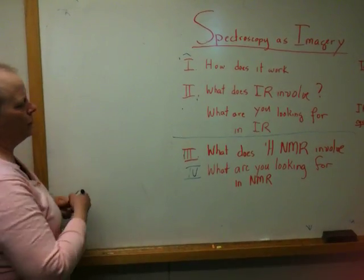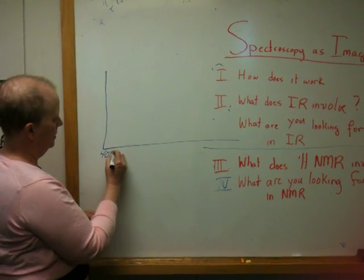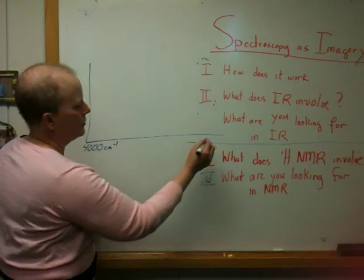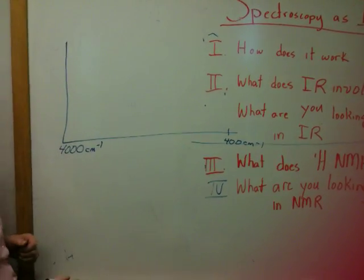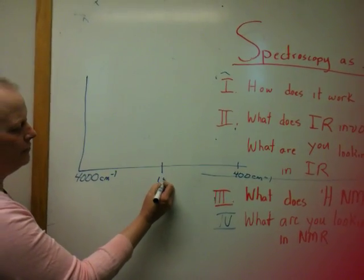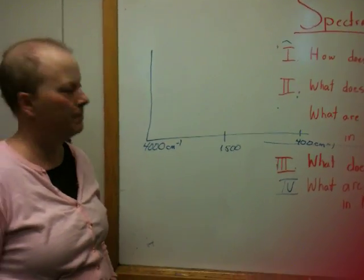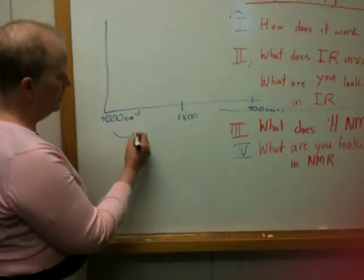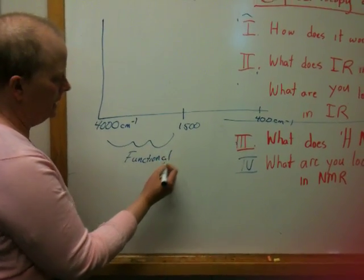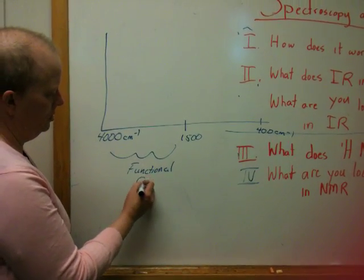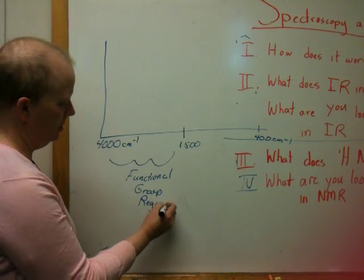Now the IR spreads from about 4,000 reciprocal centimeters to 400 reciprocal centimeters. But what I want you to look at is about 1,500 reciprocal centimeters to 4,000 reciprocal centimeters. This is called the functional group region. And that's the topography we're going to work on this semester.